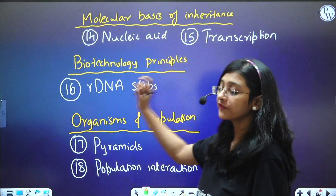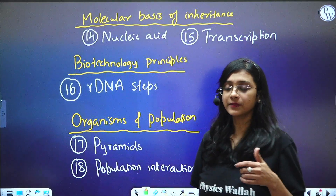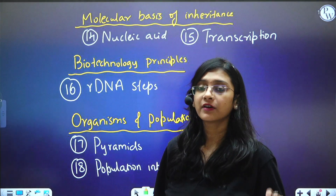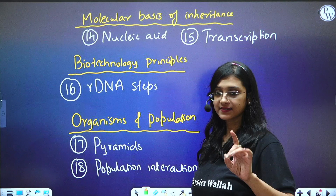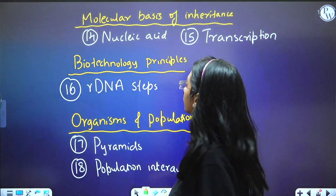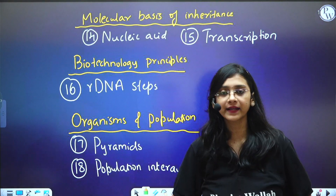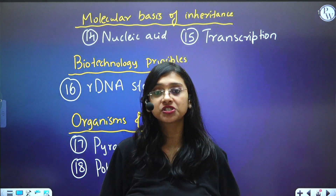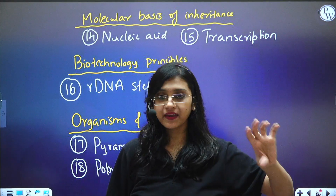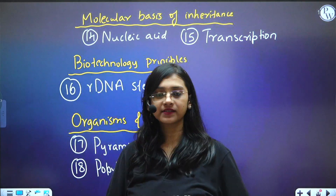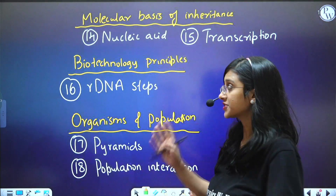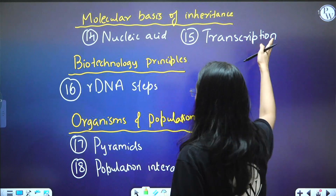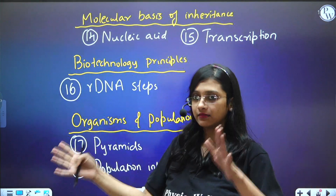Molecular Basis of Inheritance is once again a high-weightage chapter — more questions will be asked from it. Specially, transcription is very important. Everything about nucleic acids — both RNA and DNA — their structure, and the DNA double helix: base pair numbers per turn and all such details are important to know. Questions have been asked continuously from these topics.